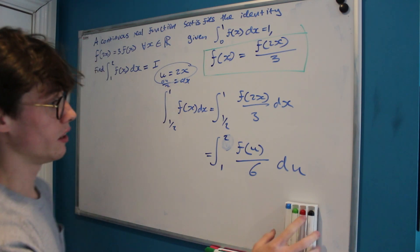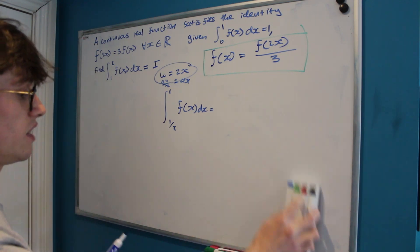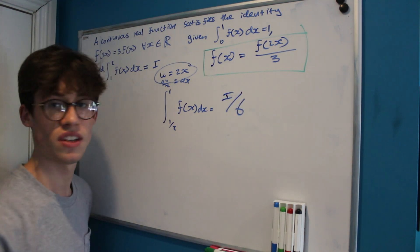So what does that tell us? Well, if our target integral is i, that means that the integral from a half to 1 is equal to i over 6.